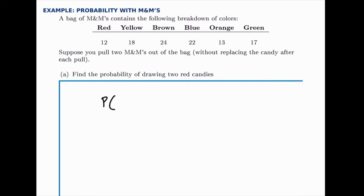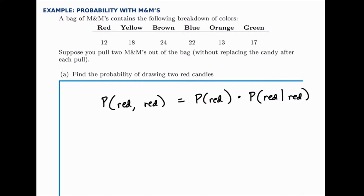The probability of drawing a red one and then another red one means we first need to find the probability of drawing a red one on the first pull, then multiply that by the probability of also getting a red one the second time, assuming we did get a red one the first time. We assume the first half of the problem went the way we needed it to. If we drew a blue one first the experiment would be over because there'd be no way to draw two red ones. So first we calculate the probability the first one is red, then under that condition we find the probability the second one is red.